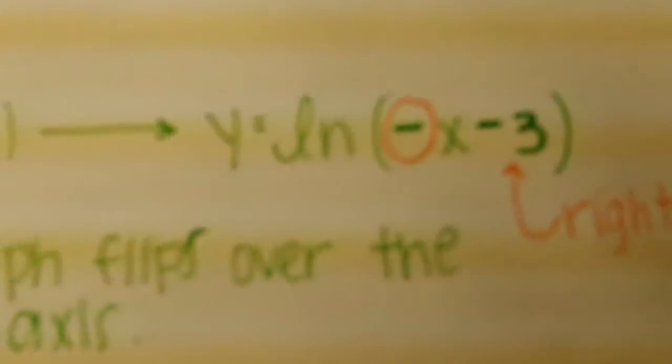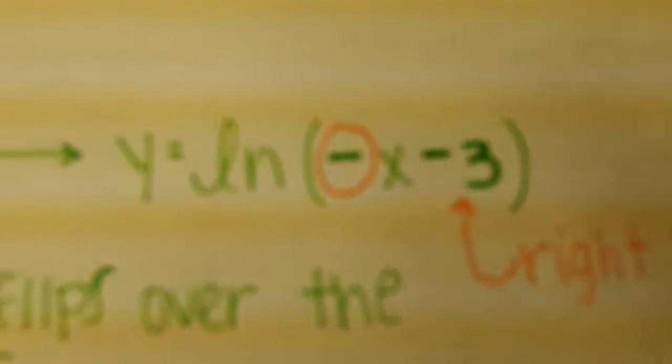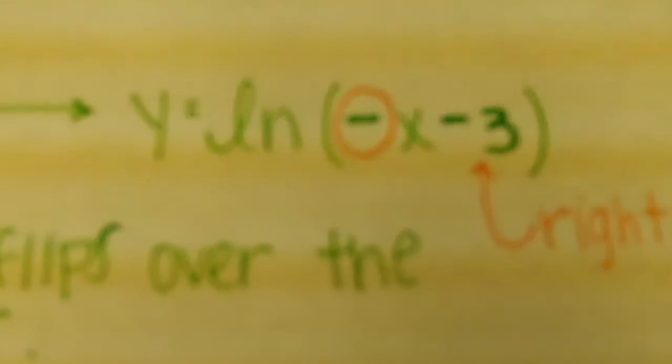And the new formula would be y equals ln of negative x minus 3. And you put the negative x in front of the x because you are moving it horizontally. And then the right 3 is a minus. It is the opposite of what you would think it would be.